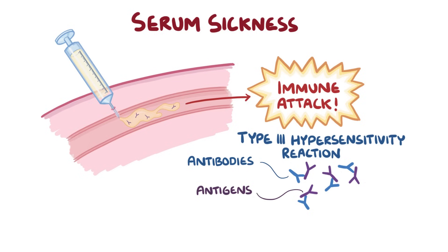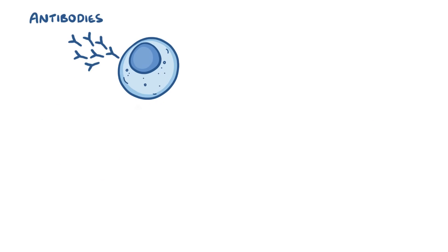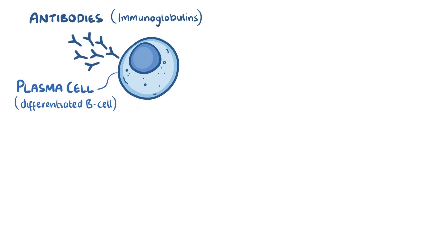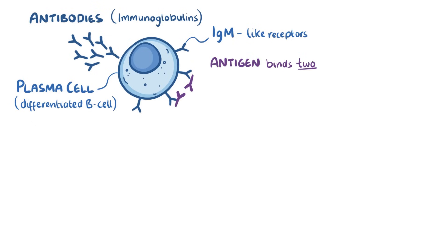In this case, the antigen is the foreign antibodies in the serum. Normally, antibodies, which are sometimes called immunoglobulins, are produced by plasma cells, which are fully mature and differentiated B cells. B cells have multiple IgM antibodies on their surface, and they act like receptors. When an antigen binds two of these receptors, it's called cross-linking.